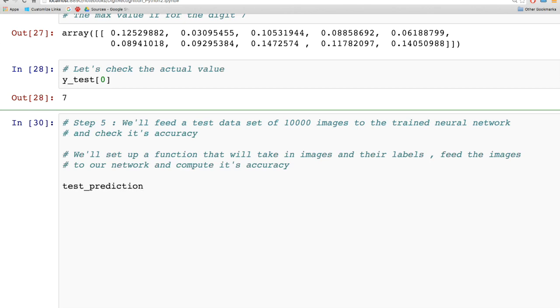test_prediction is exactly like before. It uses lasagna.layers.get_output and passes in the trained network. Then we have test_accuracy, which is a function that compares the output for each image in the test set with the actual value in the labels.